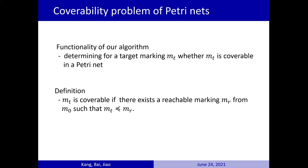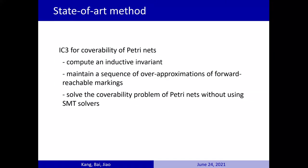MT is coverable if there exists a reachable marking MR from the initial marking such that MT is less than or equals MR. There are many state-of-art methods to solve that question. One of these is IC3. It computes an inductive invariant by maintaining a sequence of over-approximations of forward reachable markings. IC3 for Petri nets solves the coverability problem without using SMT solvers.